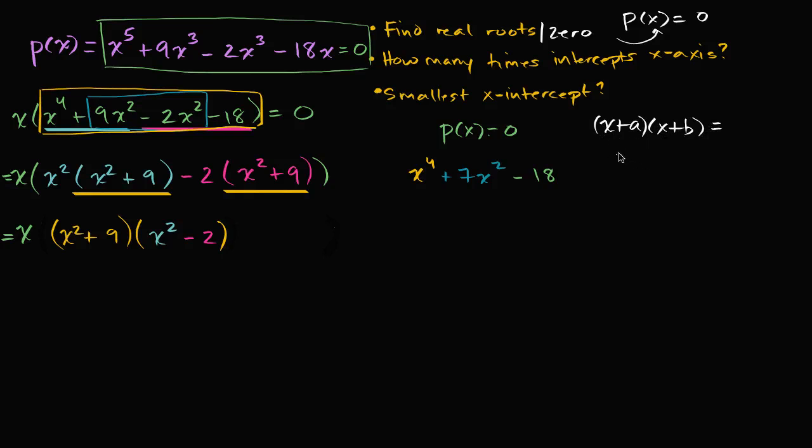that's going to equal x squared plus the sum of those two numbers, a and b, as the coefficient on the x term, plus the product of those two numbers. If you multiply this out, this is what you get.